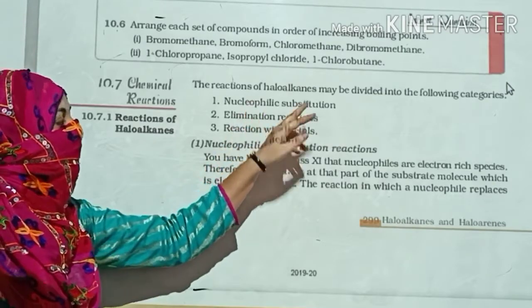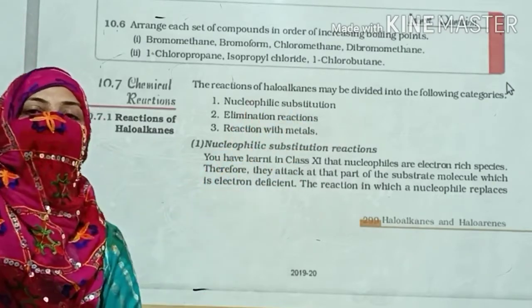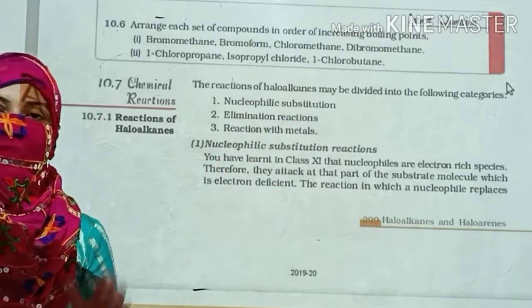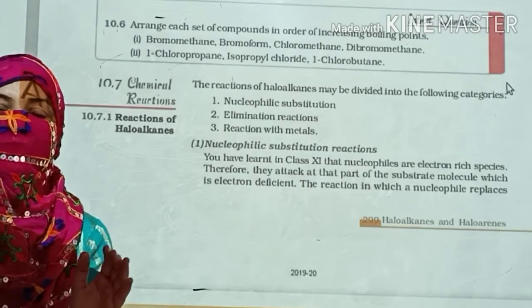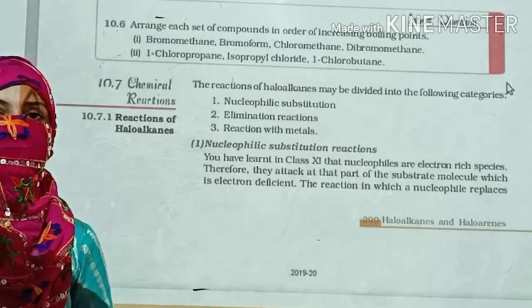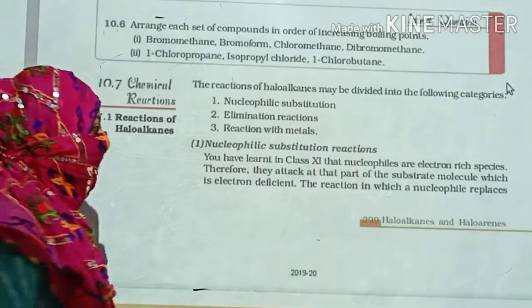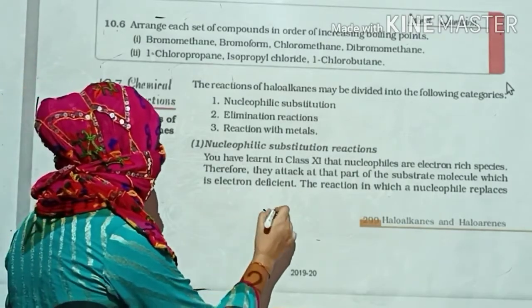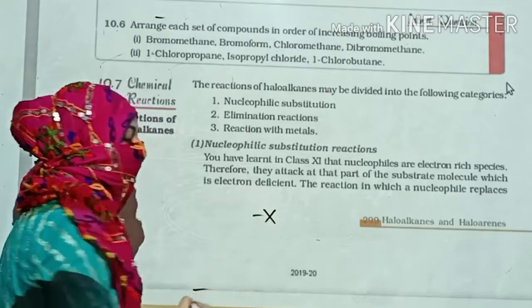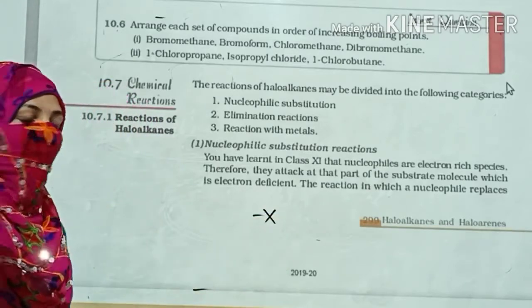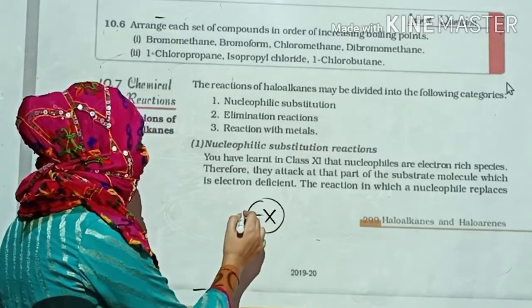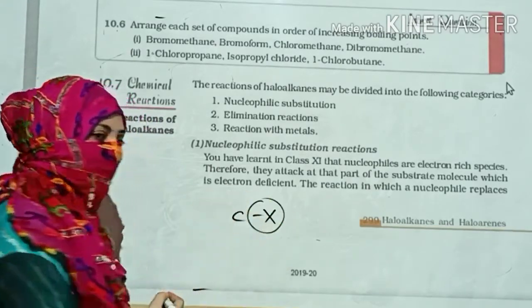We are starting with the nucleophilic substitution reaction. This is very important and easy to remember. Suppose you remove one of your X (halogen) — when X is going out from your carbon, it leaves as X⁻ (negative), and therefore the carbon becomes positive, meaning a nucleophile is incoming.